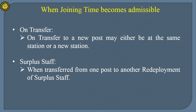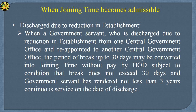When joining time becomes admissible: On transfer to a new post, whether at the same station or a new station. For surplus staff, when transferred from one post to another for redeployment. When a government servant is discharged due to reduction in establishment from one Central Government Office and reappointed to another, the period of break up to 30 days may be converted into joining time without pay by the HOD, subject to the condition that the break does not exceed 30 days and the government servant has rendered not less than 3 years continuous service on the date of discharge.